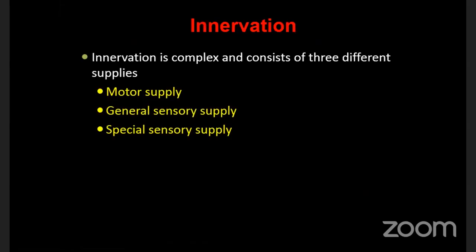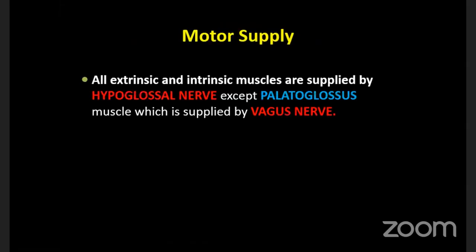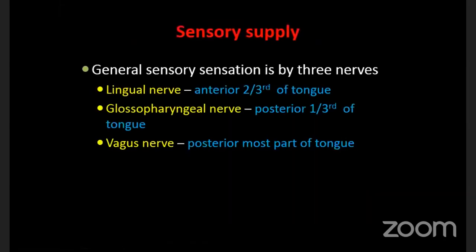Now we move on to the innervation of the tongue - a complex topic. We divide it into motor supply, general sensory supply, and special sensory supply. Regarding motor supply: all extrinsic and intrinsic muscles of the tongue are supplied by the hypoglossal nerve, except the palatoglossus, which is supplied by the vagus nerve.